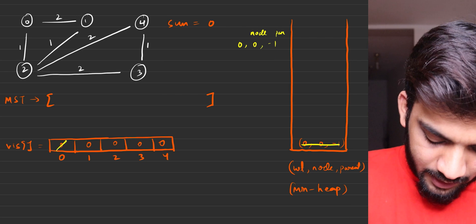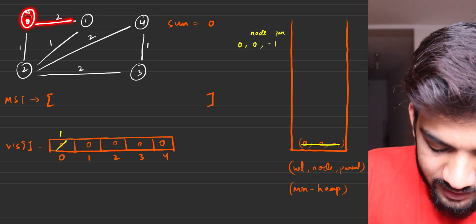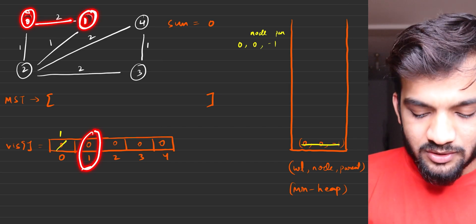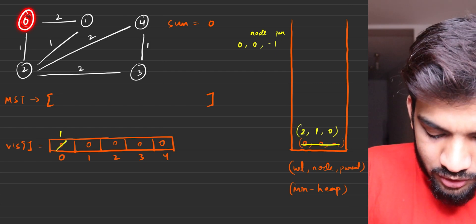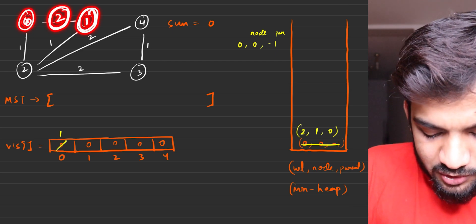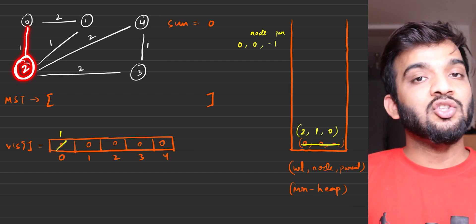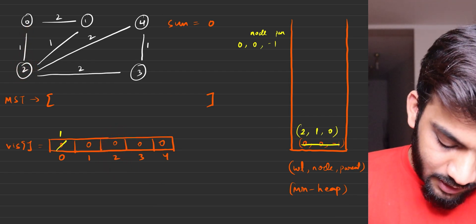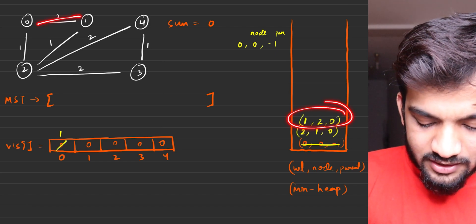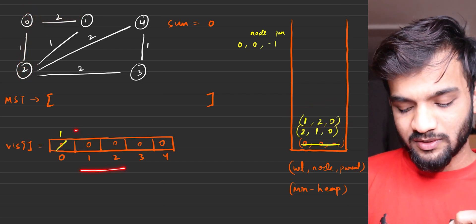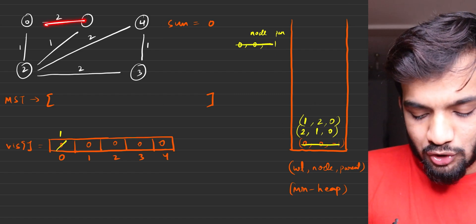Mark node 0 as visited. Now standing at 0, look at its adjacent nodes. Adjacent node 1 is unvisited, so take edge weight 2, node 1, came from 0 — push (2, 1, 0) into the priority queue. Next, node 2 is also adjacent and unvisited, so take edge weight 1, node 2, came from 0 — push (1, 2, 0). Do not mark them as visited yet. First iteration complete; all adjacent nodes pushed into the minimum heap.